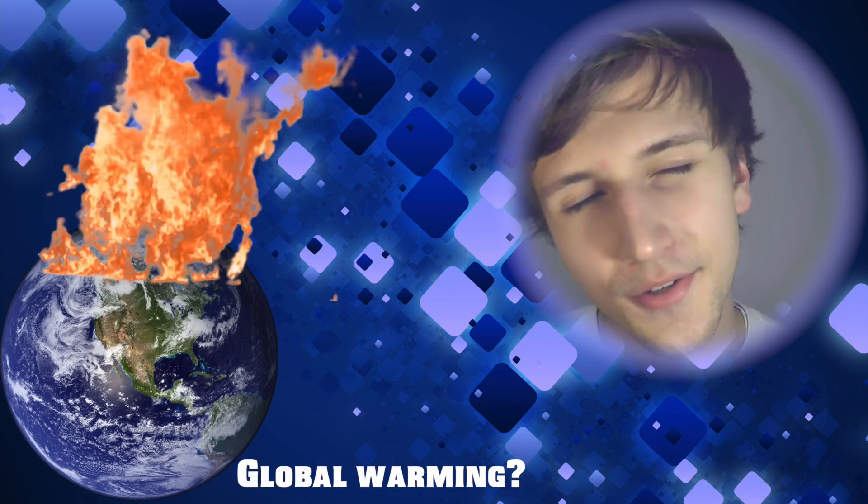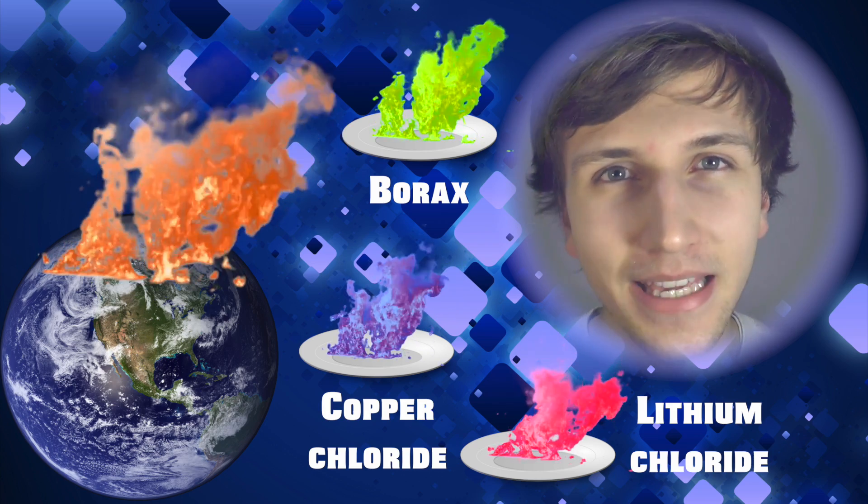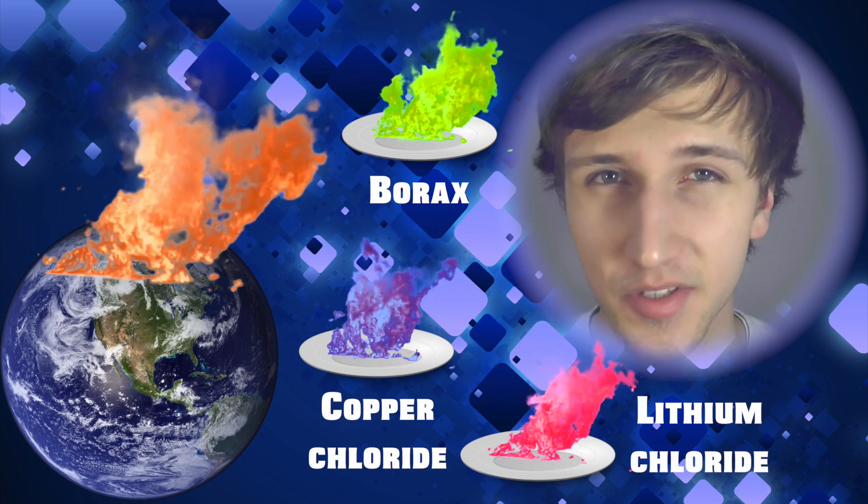The color of fire on Earth is mostly determined by what is actually being burned, rather than the temperature in most cases. This is why we can make different color fires, like green and blue and pink. But that doesn't necessarily mean that it's hotter than the other colors.